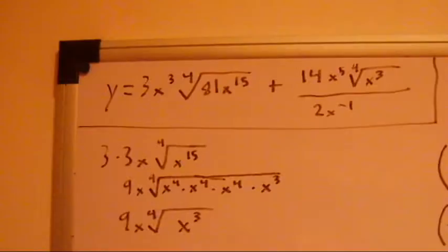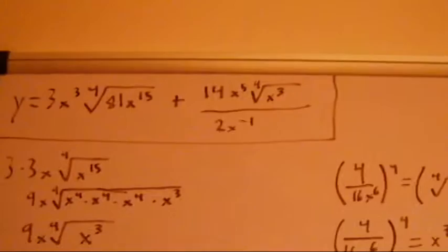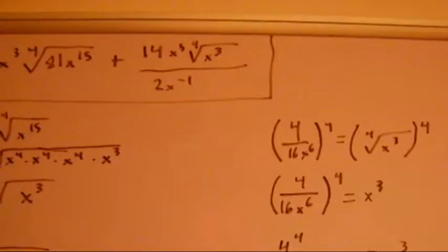This is number 1 on the practice test. Our equation is y equals 3x to the 3rd, to the 4th radical, 81x to the 15th plus 14x to the 5th and the 4th radical, x to the 3rd over 2x to the negative 1.